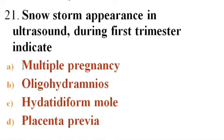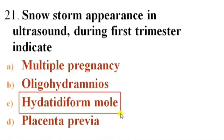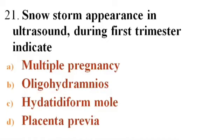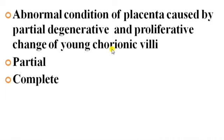Next question: Snowstorm appearance on ultrasound during the first trimester indicates — Options: A) Multiple pregnancy, B) Oligohydramnios, C) Hydatidiform mole, D) Placenta previa. Answer is C — Hydatidiform mole. The hydatidiform mole (vesicular mole) is an abnormal condition of the placenta caused by partial degenerative and proliferative changes of the young chorionic villi, resulting from overproduction of tissue that is supposed to develop into the placenta.